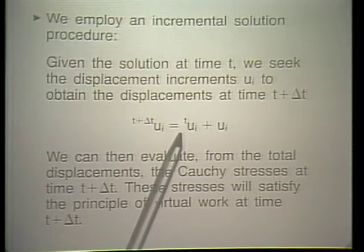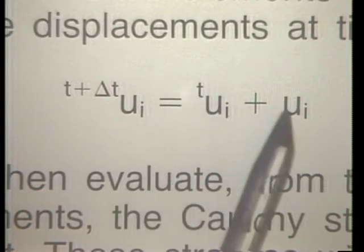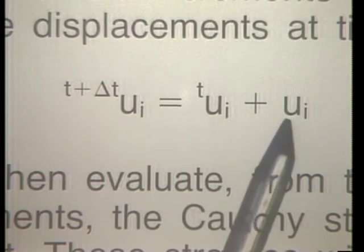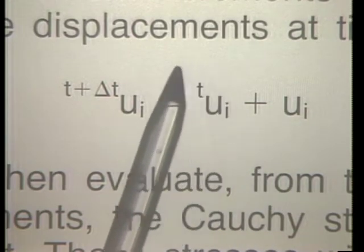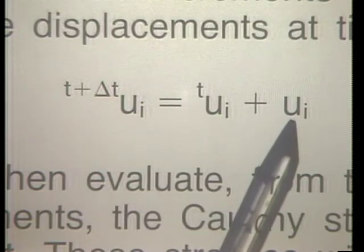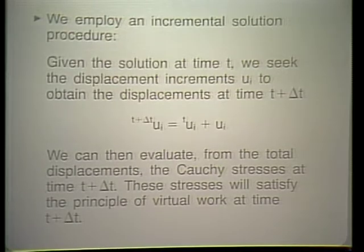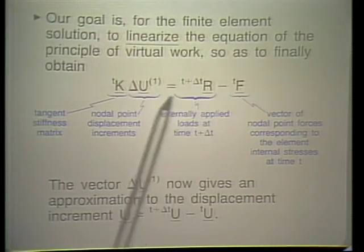We will use an incremental solution: the solution at time t plus delta t is calculated from the solution at time t by incrementing the displacements by ui. The t ui displacements at time t are known, and ui are the unknown quantities we are looking for. Our goal for the finite element solution is to linearize the equation of the principle of virtual work so as to obtain a set of finite element equations.